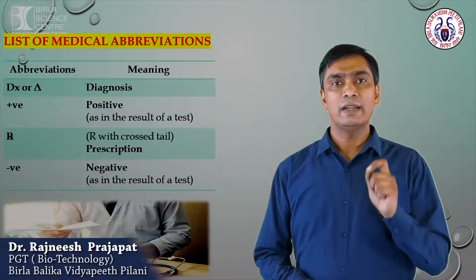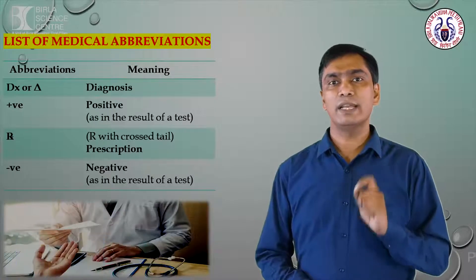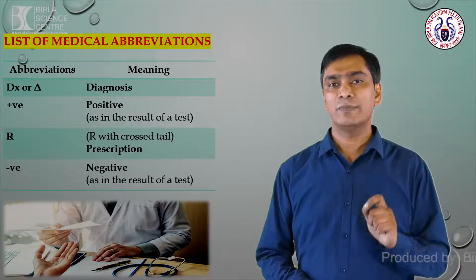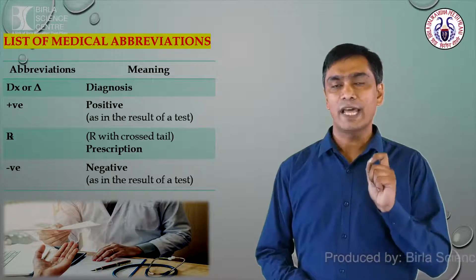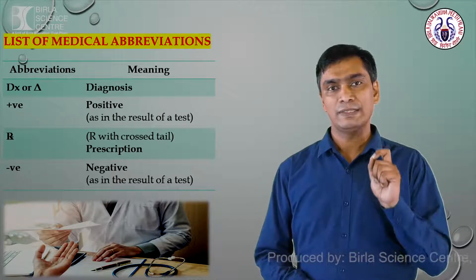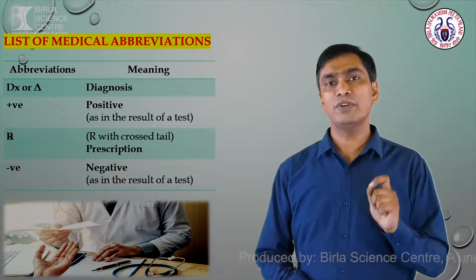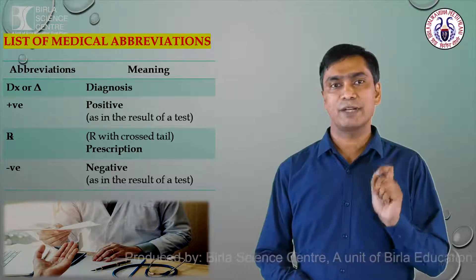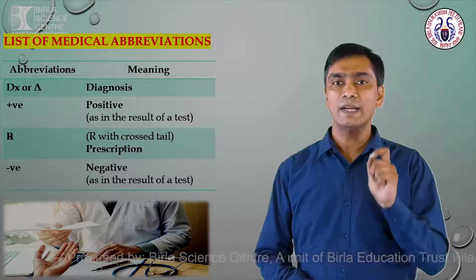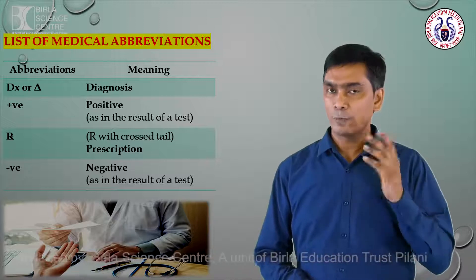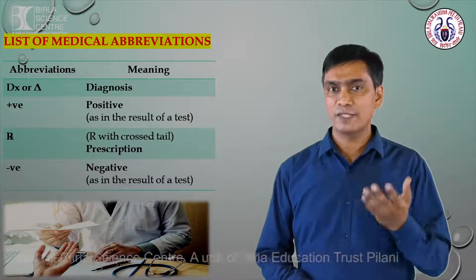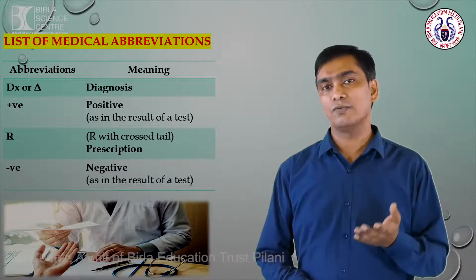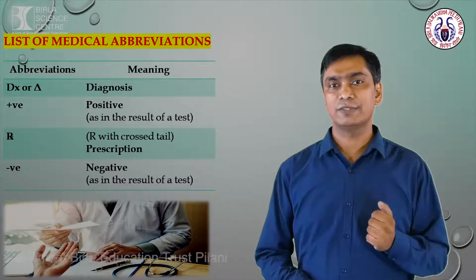In this slide, I have mentioned a list of some medical abbreviations. DX basically describes the diagnosis. The positive symbol indicates a positive result of a diagnosis experiment. RX indicates prescription or prescribing medicine to the patient. Negative indicates a negative result of a particular diagnostic test.